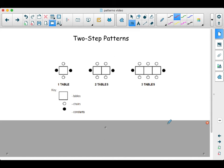Looking at two-step patterns, sometimes we have a constant or something that doesn't change in the question. If you look at this example, these end chairs on these tables aren't going to change. They're going to be those two chairs every time. So we're going to add that two on at the end to find the total number of chairs. For every table, we're increasing by two chairs as well that we add.